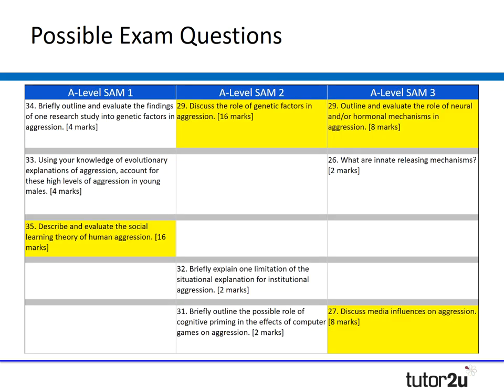It's always interesting to look through the possible exam questions. Being a new linear exam, we have no idea what the exams will look like in June 2017, but we can get a picture by looking at the sample assessment material. AQA have released three sample assessment papers, and I've broken them down into rows for each point of the specification: neural and hormonal, ethological, social psychological, institutional, and media influences.